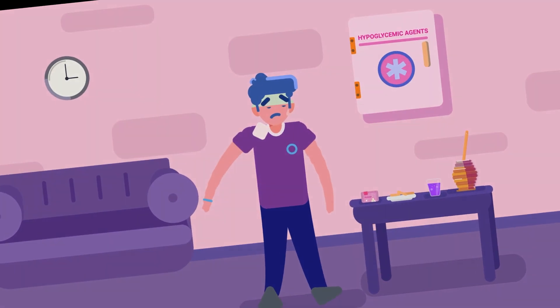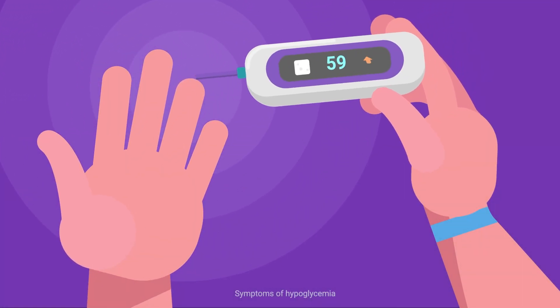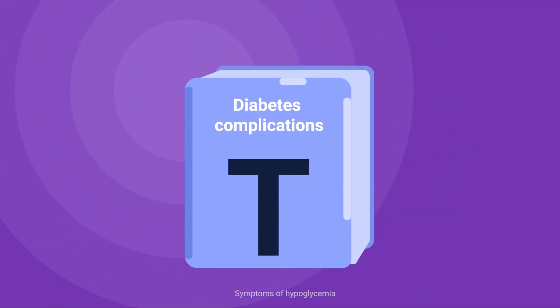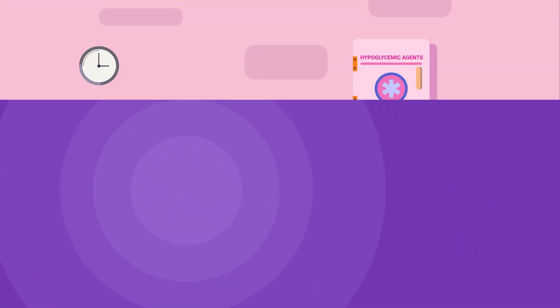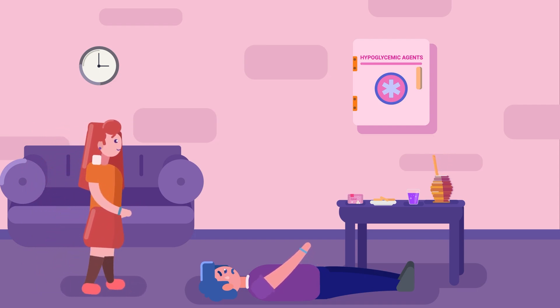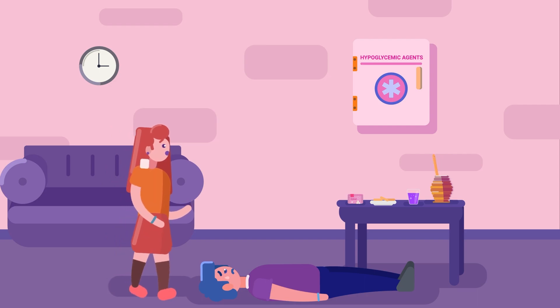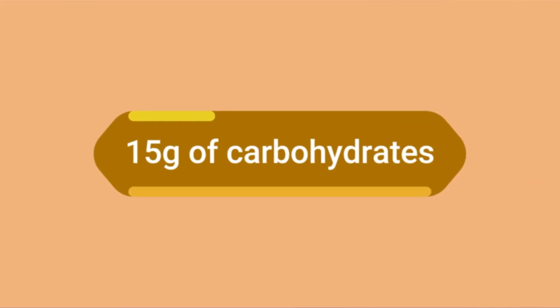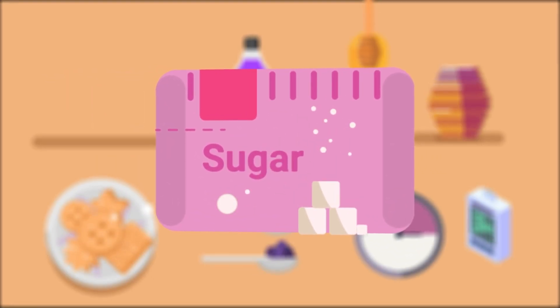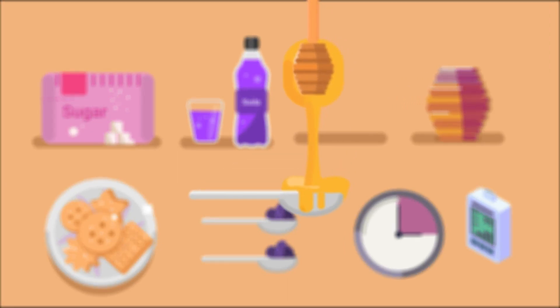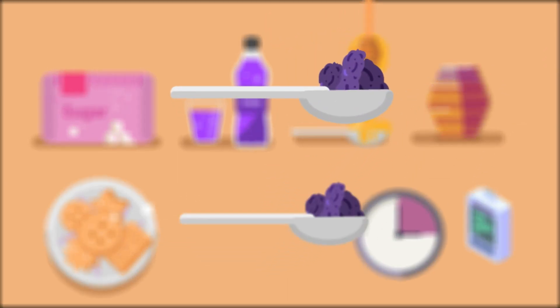To avoid this complication, it is important to measure glucose levels frequently and to know the symptoms of hypoglycemia. Treating hypoglycemia quickly prevents severe symptoms. If symptoms begin to appear, they can be improved with 15 grams of fast-acting carbohydrates, such as an envelope or tablespoon of sugar, half a glass of non-diet soda or juice, one tablespoon of honey, or two tablespoons of raisins or four saltine crackers.